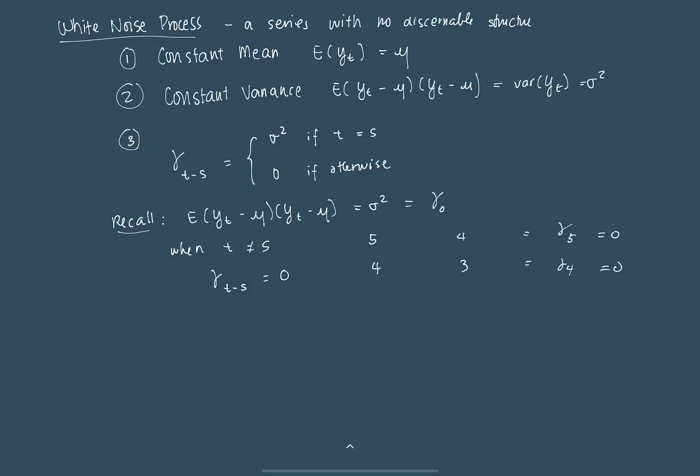Because it kind of assumes that there is no covariance or no association between one time period and another. Why is that? Because, again, a white noise process is a series with no discernible structure. So you cannot infer some sort of association between one time period and another. It's purely stochastic.